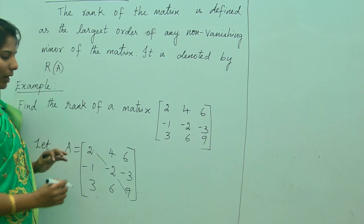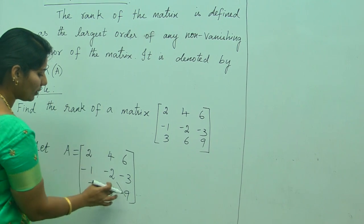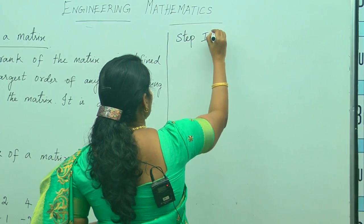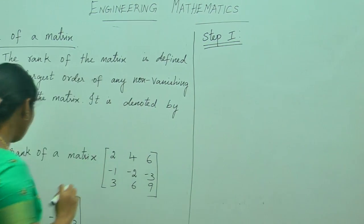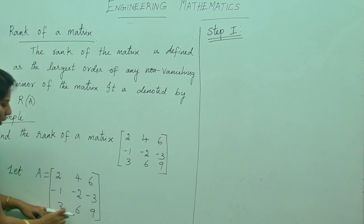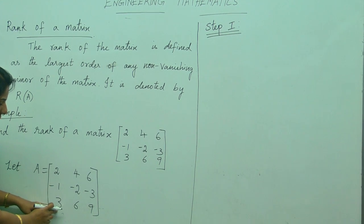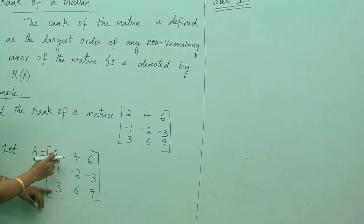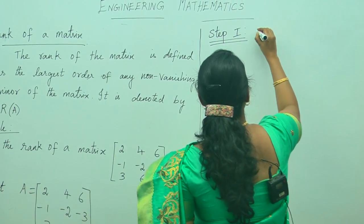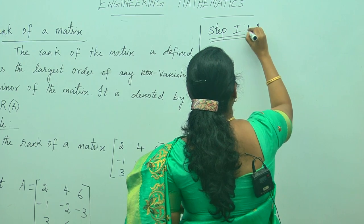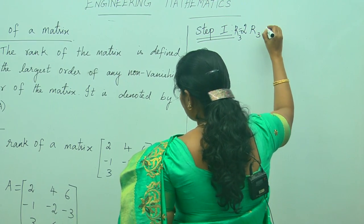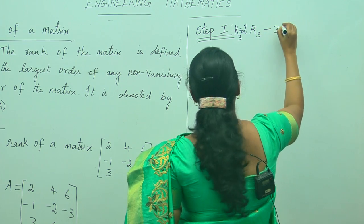That is what the rank of a matrix method requires. How will you make it? By using row operation steps. Step 1: we need to make the first element of the third row zero by using the first row. The first element of the third row is 3, and the first element of the first row is 2. We apply R3 = 2R3 minus 3R1.